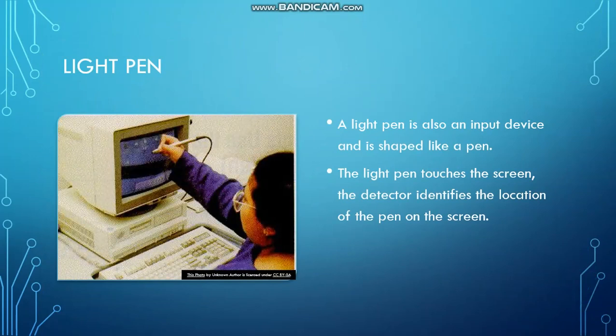The next one is a light pen. Light pen is also an input device and it looks like a normal pen that we use. The light pen touches the screen and the detector identifies the location of the pen on the screen and it works accordingly.